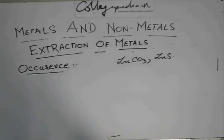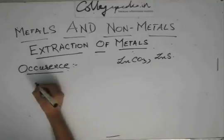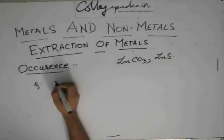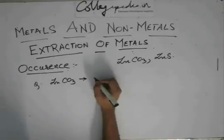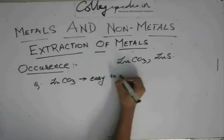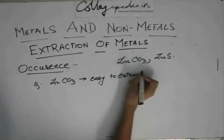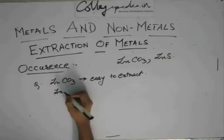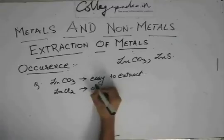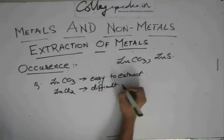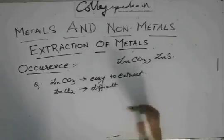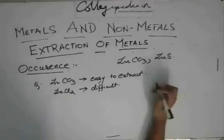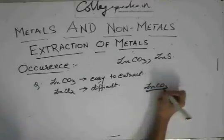If someone asks you — suppose there's a question — that zinc carbonate is easy to extract zinc from, while another compound is difficult to extract zinc from, so which one is the ore out of these two? From the definition of ore, it should be easy and economically feasible — profitable and feasible — so zinc carbonate should be your ore.